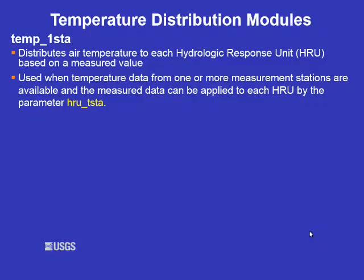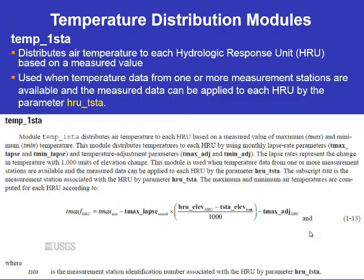The first temperature distribution module is temp_1sta. This is the simplest way to distribute maximum and minimum temperature in the basin. temp_1sta distributes the temperature to each HRU based on a measured value. You must designate one station for each HRU with the parameter HRU_T_sta. You need to supply a lapse rate by month and an adjustment factor by HRU for maximum and minimum temperature.